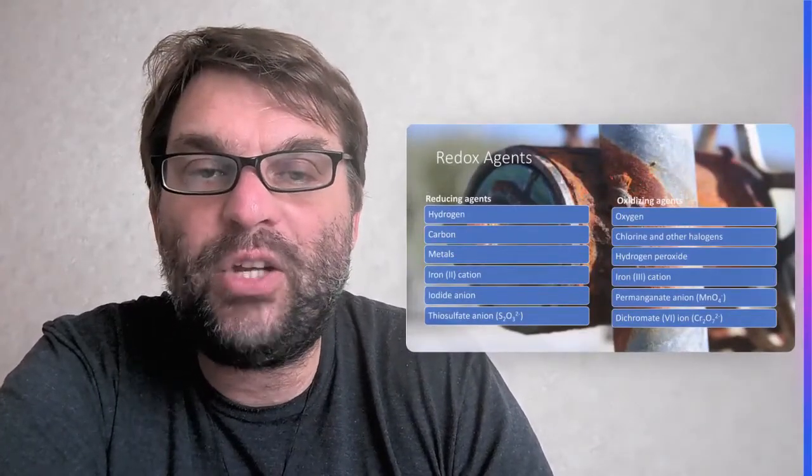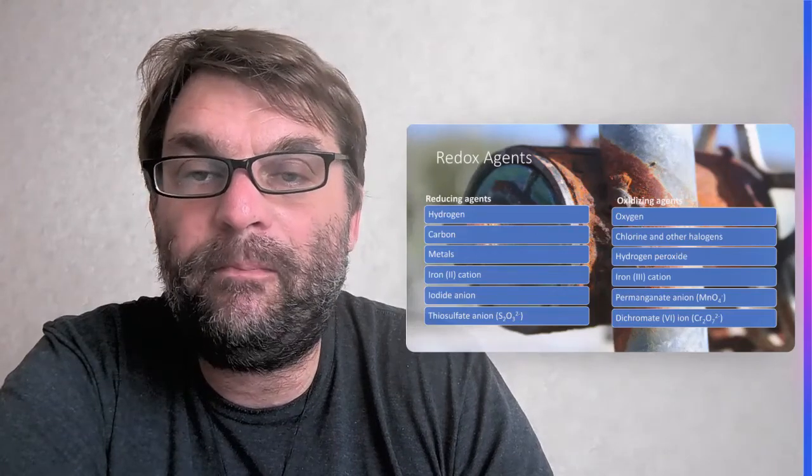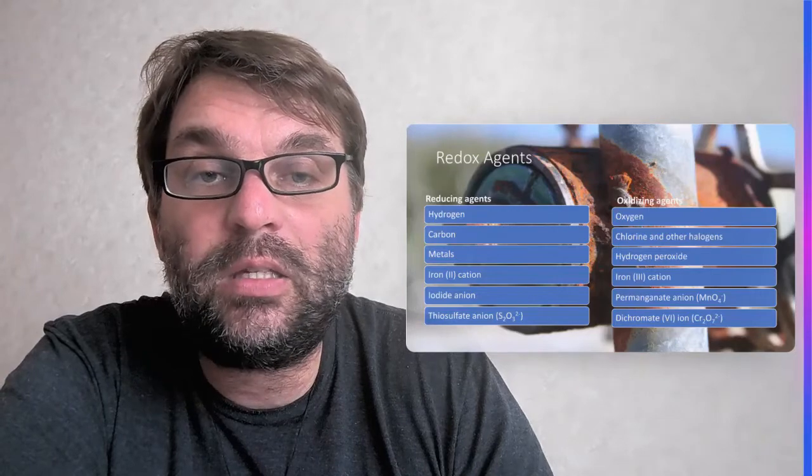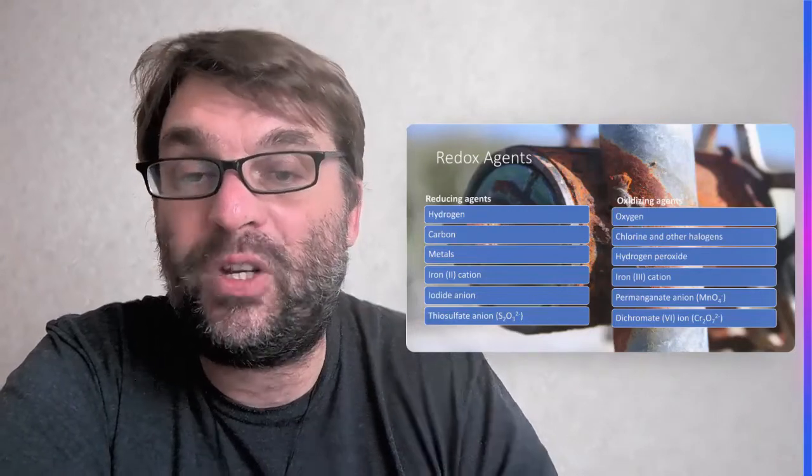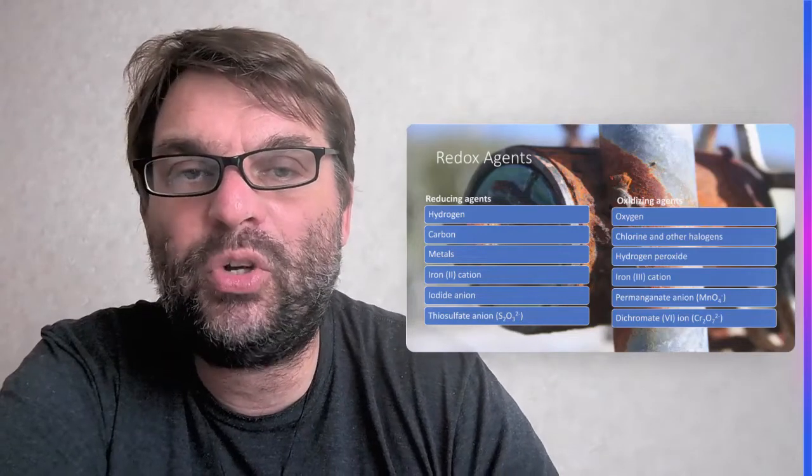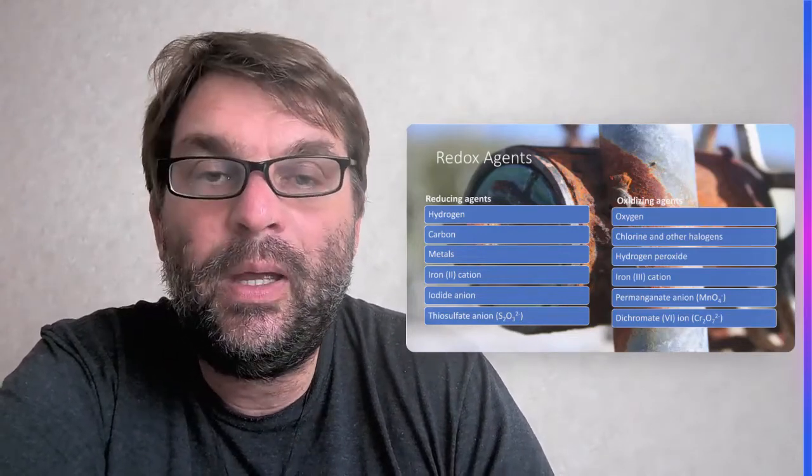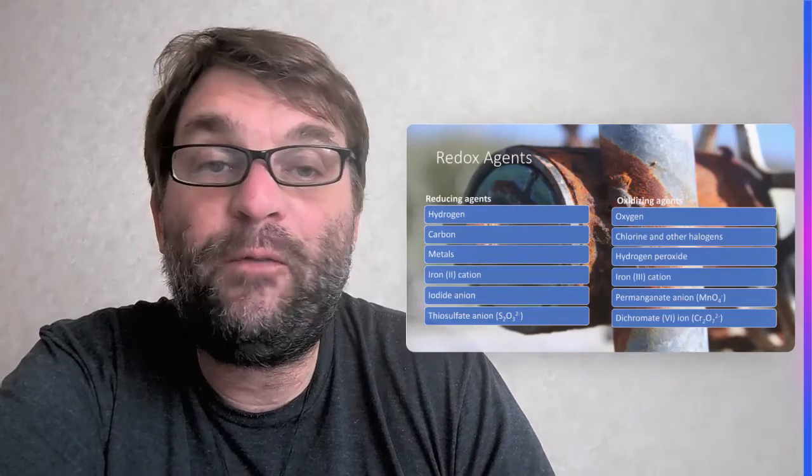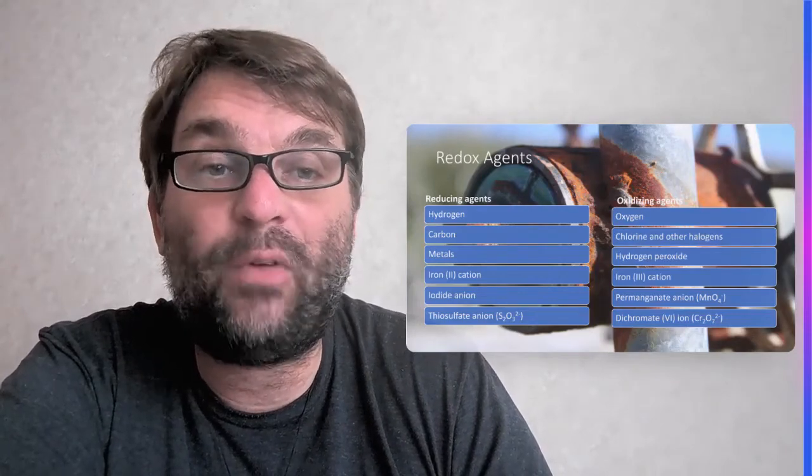In terms of reducing agents, we have different agents like metals, iodide anions, hydrogen, and carbon. For example, for metals, the Birch reduction, which is used in organic chemistry, involves lithium being oxidized to the lithium plus cation.